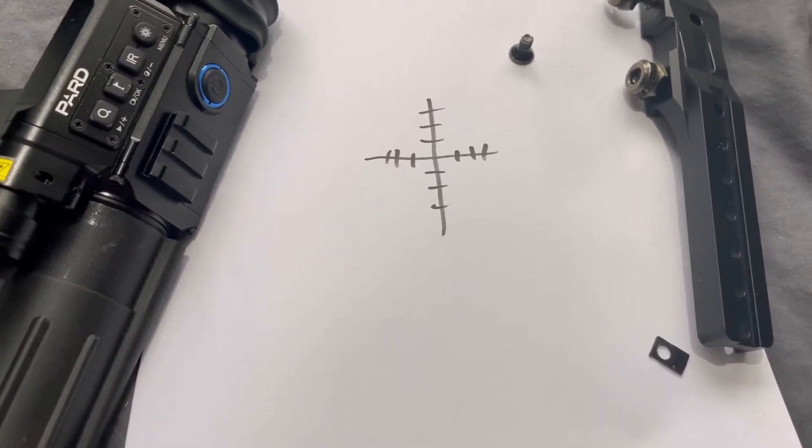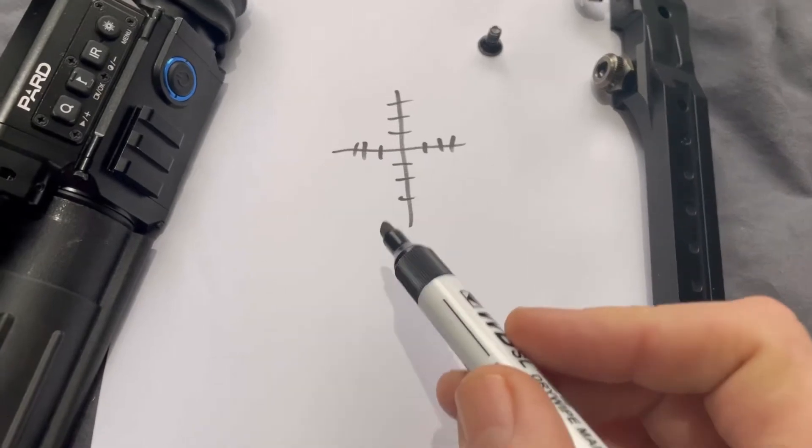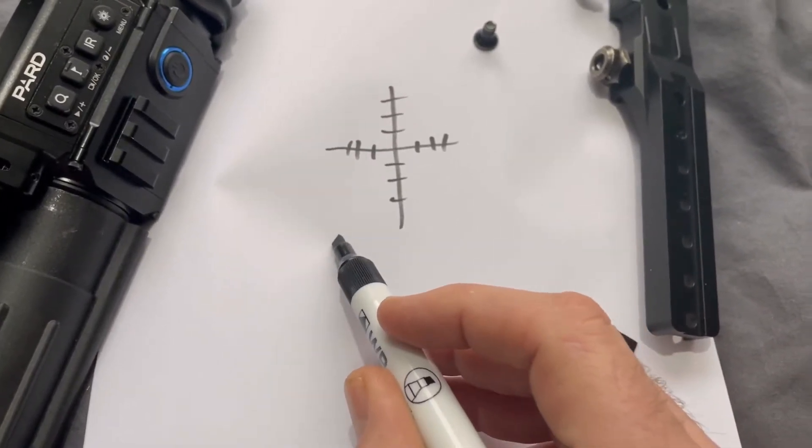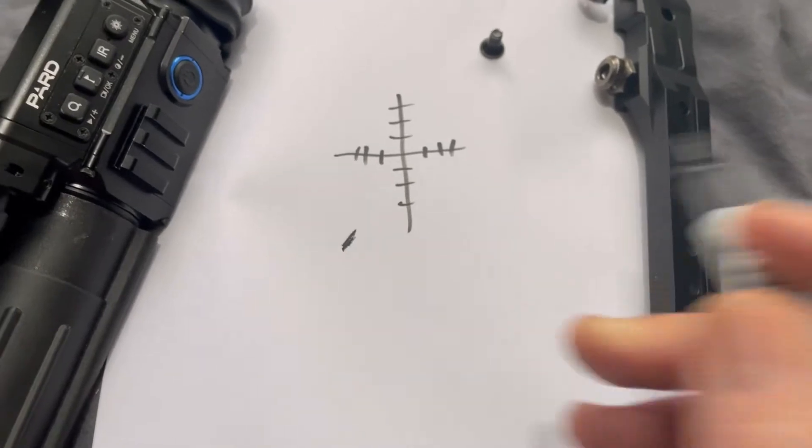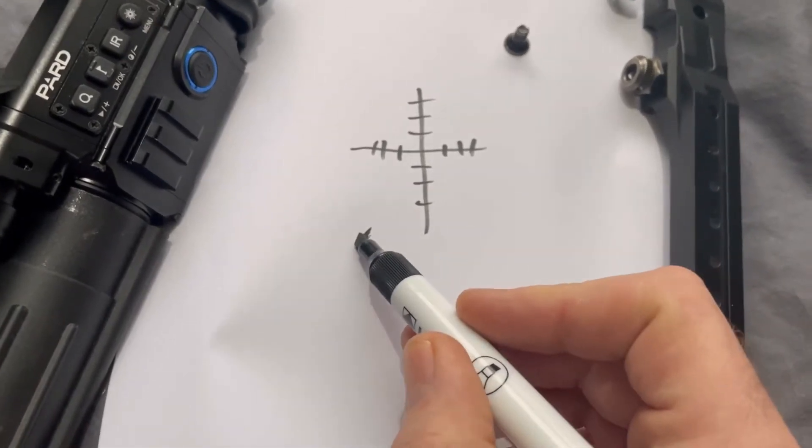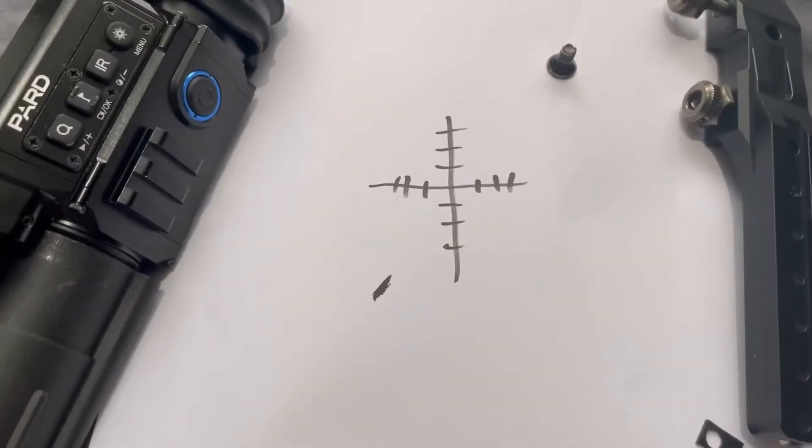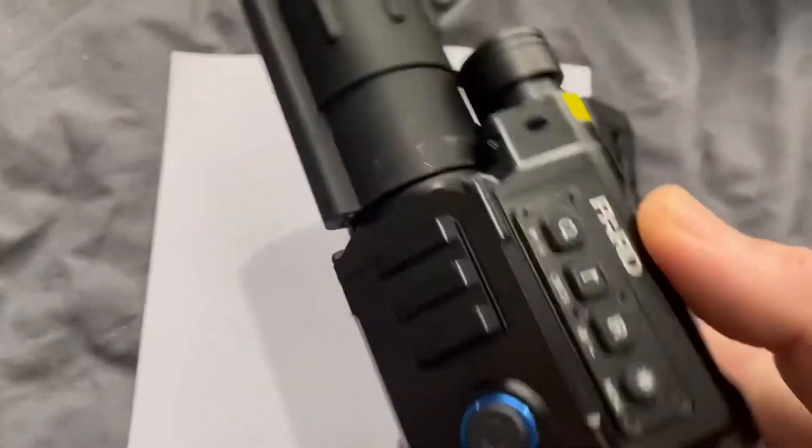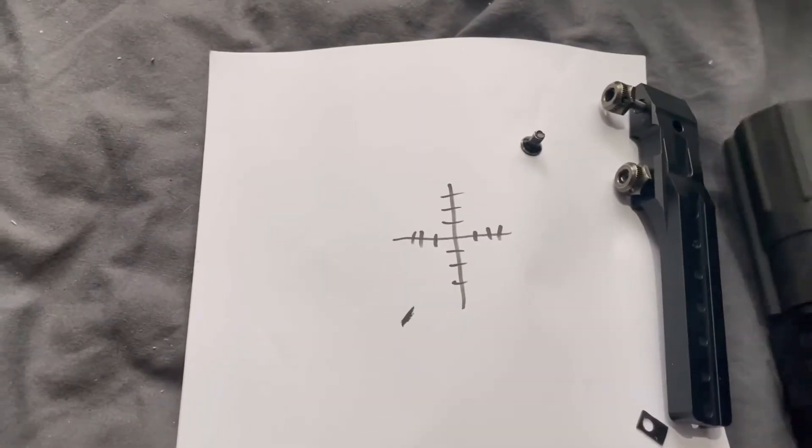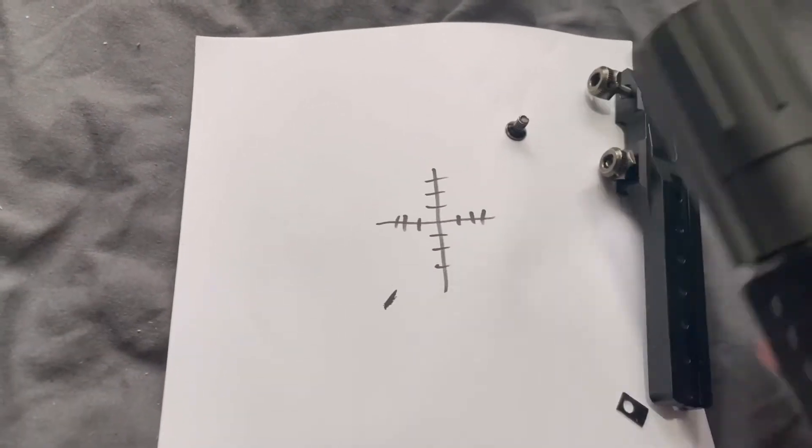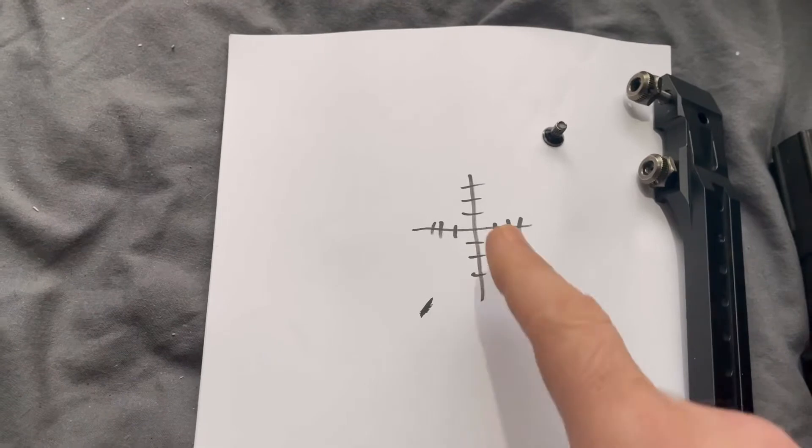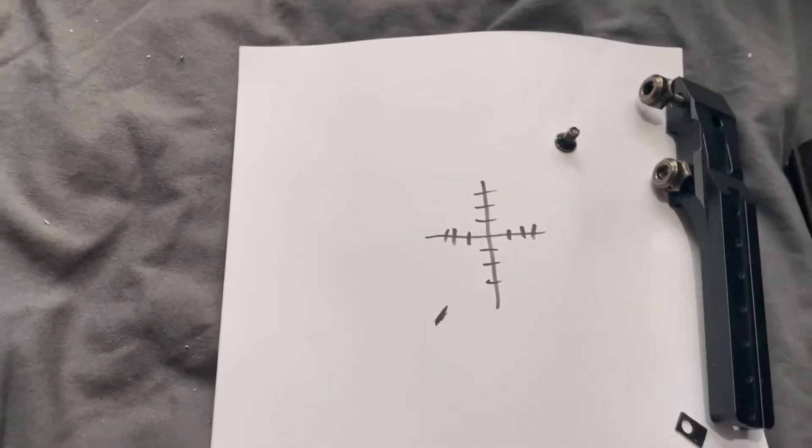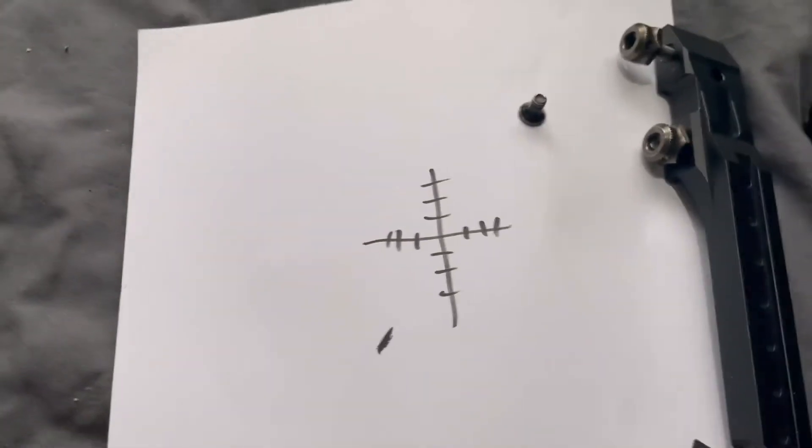Now on mine it was shooting virtually off the paper to be honest, it was hitting down here somewhere. So that's what you want to be shimming to first. Now what you want to do is shim it in such a way that you point the pad at the point of impact. So you move the crosshair to the point of impact, not in the menu, you're doing it by manually shimming it.